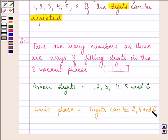So that means the unit place can be filled in three different ways.